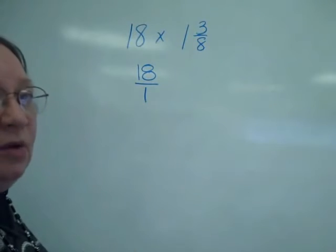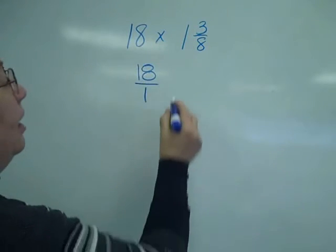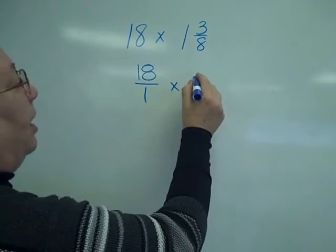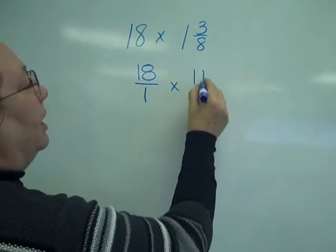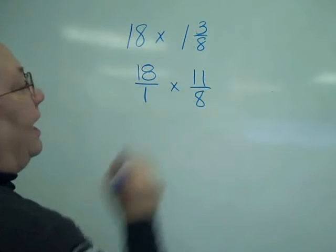And then, if I multiply 8 times 1 plus 3, I'm going to get 11 over 8.